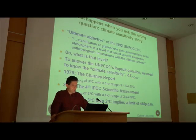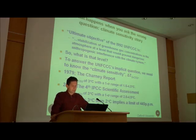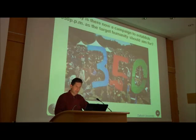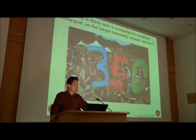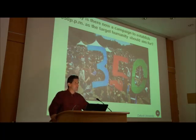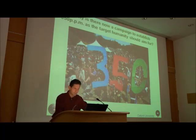If the climate sensitivity is 3 degrees, then a 2-degree limit implies we can go to 445 ppm. One of the hot debates for Copenhagen is: should we aim for 350 ppm? This is now a global campaign, recently endorsed by Nick Stern — that we should all aim for 350 ppm. What does this mean and why are people aiming for this?